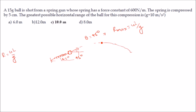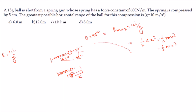We need to calculate the value of u. The spring is compressed by 5 cm, so the potential energy stored is ½kx², and this is entirely converted into kinetic energy ½mu². The spring is compressed by distance x from its natural length, and when it returns to its natural length the ball is launched with velocity u at 45°. So ½mu² = ½kx².